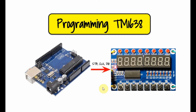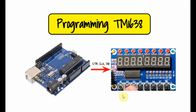In this project, the TM1638 is programmed to display different counts on the 7-segment display. When we press button S1, we will get a 1-digit hexadecimal count on the first 7-segment display. When we press S2, we will get a 2-digit decimal count from 0 to 99. And when we press S3, we will get a 4-digit decimal count from 0 to 99.